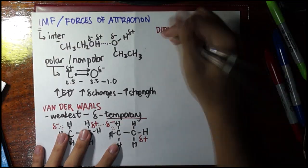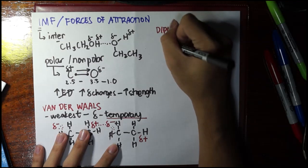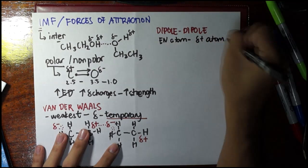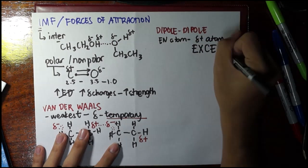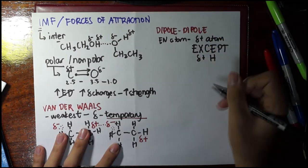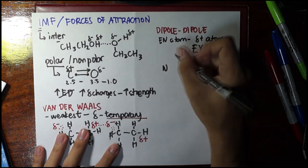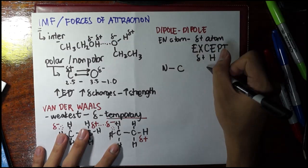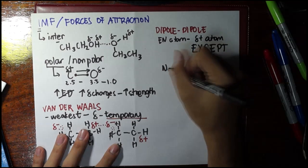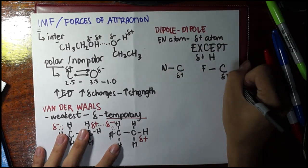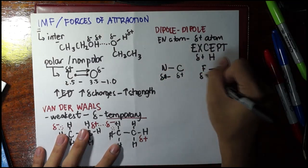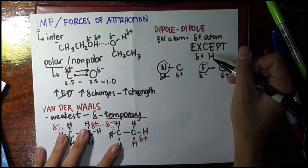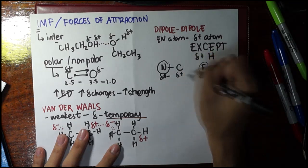The next force of interaction is dipole-dipole. It occurs between an electronegative atom and another partially positive atom — except for a partially positive hydrogen. For example, nitrogen and carbon, or fluorine and carbon: in both cases carbon is the less electronegative atom so it carries the partial positive charge, while nitrogen and fluorine carry the partial negative charge. That interaction is a dipole-dipole force.